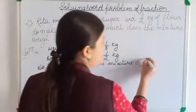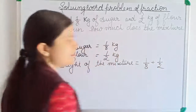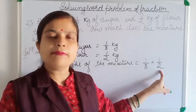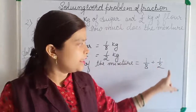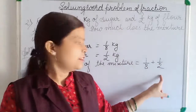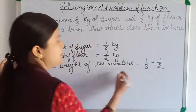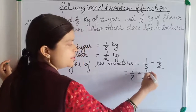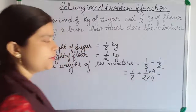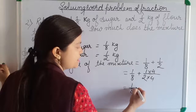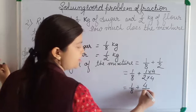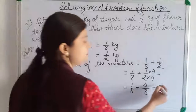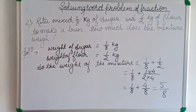Weight of the mixture equals 1 by 8 plus 1 by 2. This is an unlike fraction. We need to make it a like fraction. We can convert 1 by 2 to an equivalent fraction with denominator 8 by multiplying by 4: 1 by 2 becomes 4 by 8. So we have 1 by 8 plus 4 by 8. Now it is a like fraction — we add the numerators: 4 plus 1 equals 5. The answer is 5 by 8 kg.